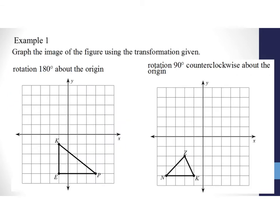Let's look at an example where we graph the image of a figure using a given transformation. We're going to take triangle KEP and rotate it 180 degrees around the origin. I like to label my points first. Point P is at coordinate (3, -4), K is at (-1, -1), and E is at (-1, -4). When doing a 180-degree rotation, I switch the signs of both X and Y to produce the new image.